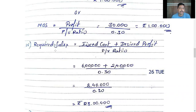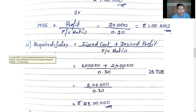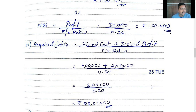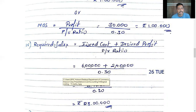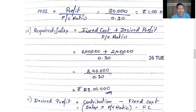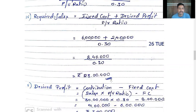Number 4 — required sales. Formula: fixed cost plus desired profit divided by PV ratio. Fixed cost is Rs. 6,00,000 plus desired profit Rs. 2,40,000 equals Rs. 8,40,000 divided by 0.30 PV ratio. So required sales equals Rs. 28,00,000.